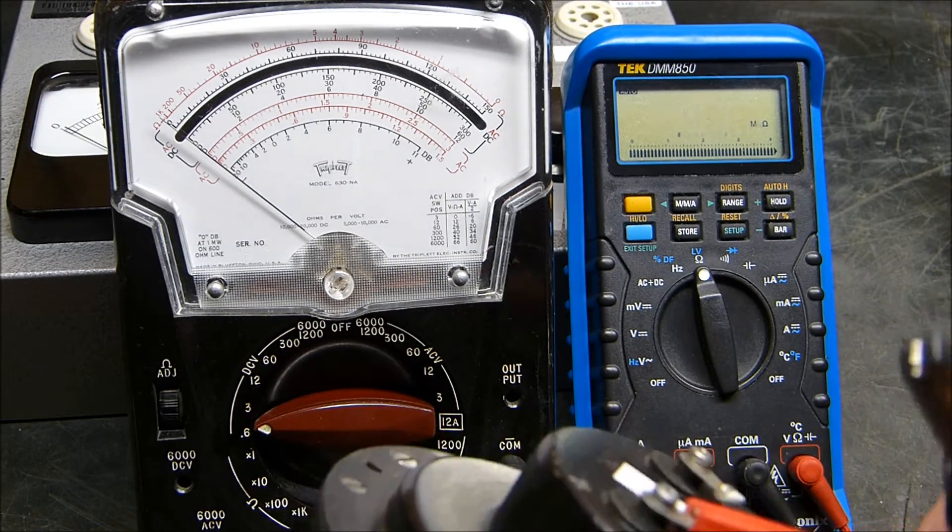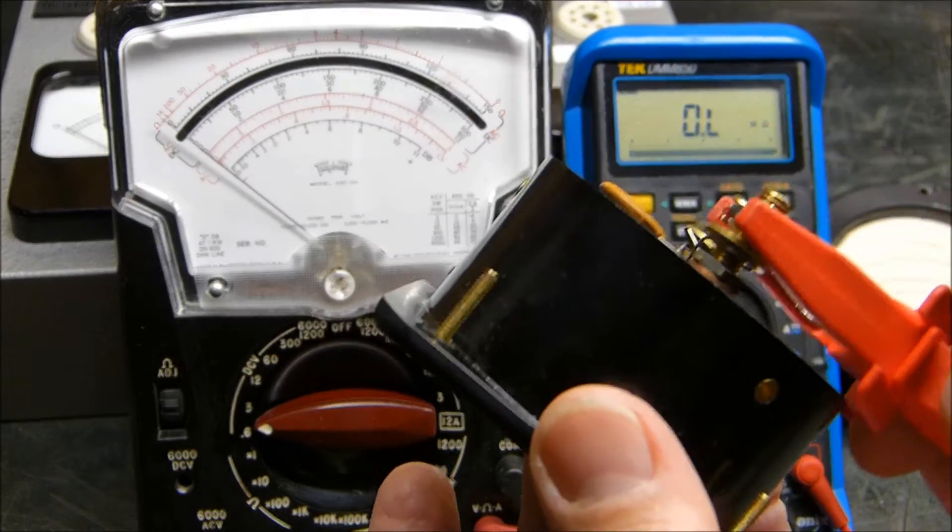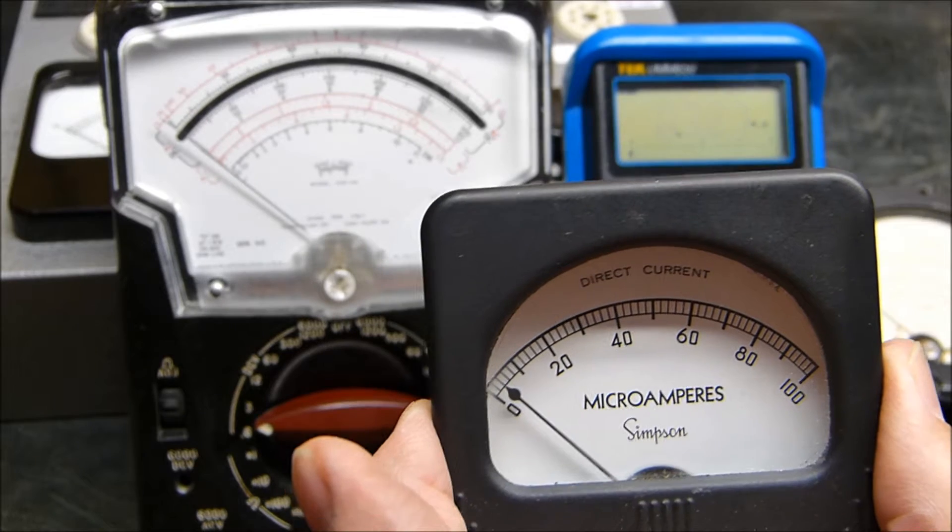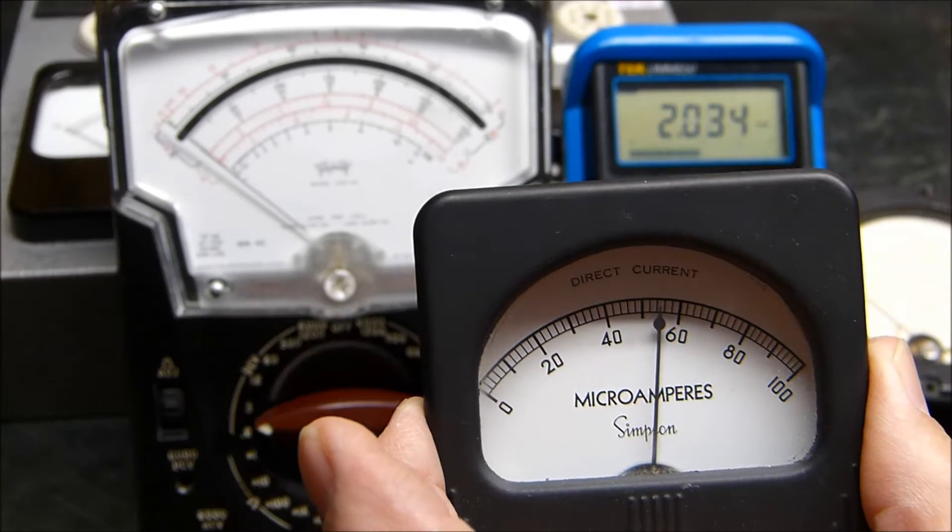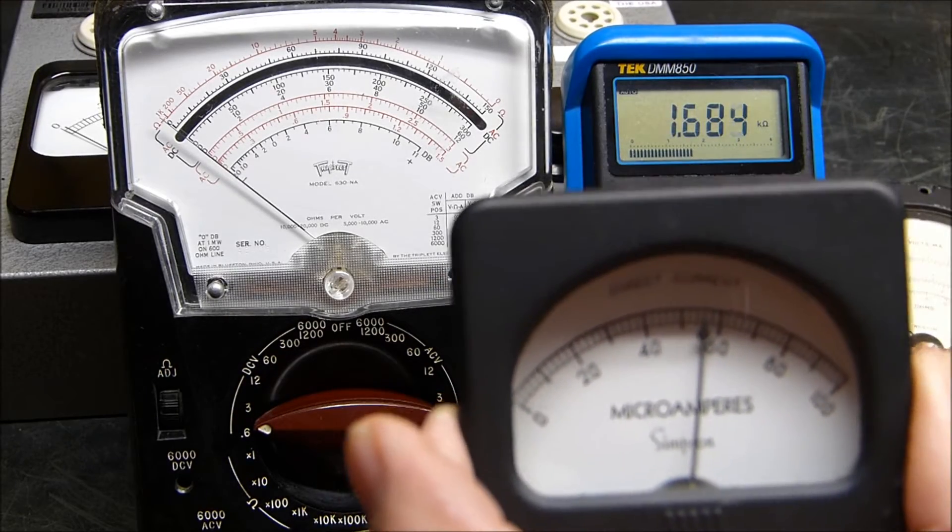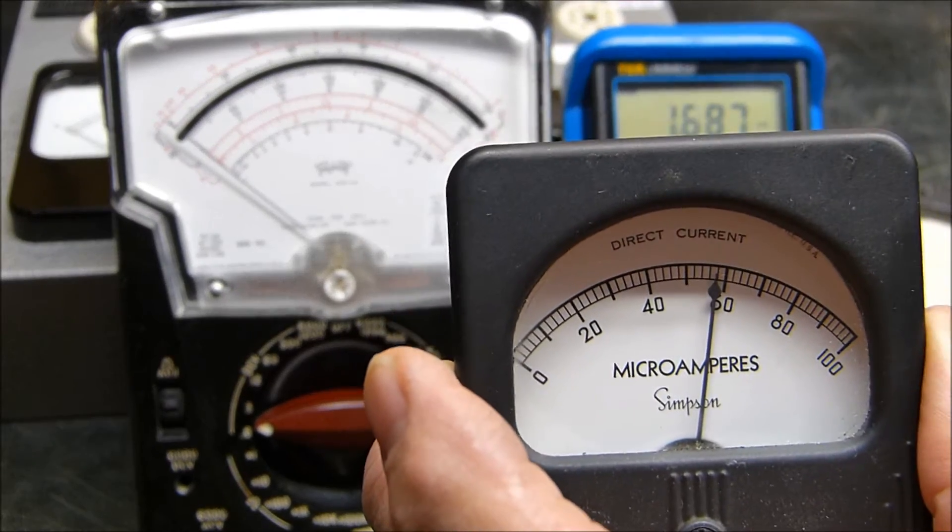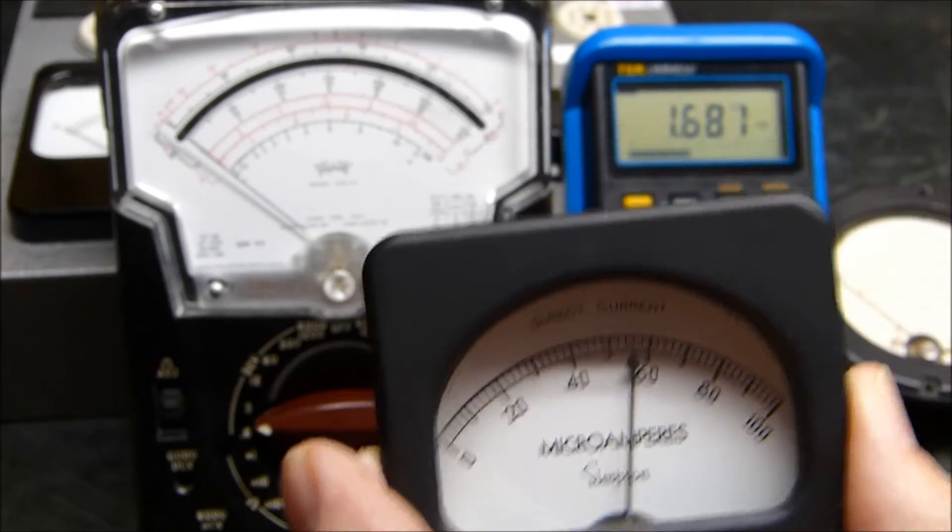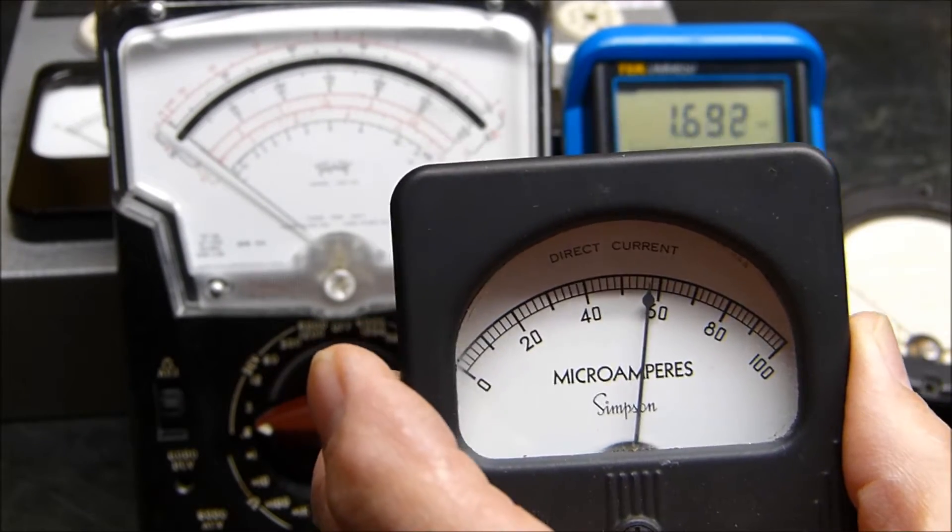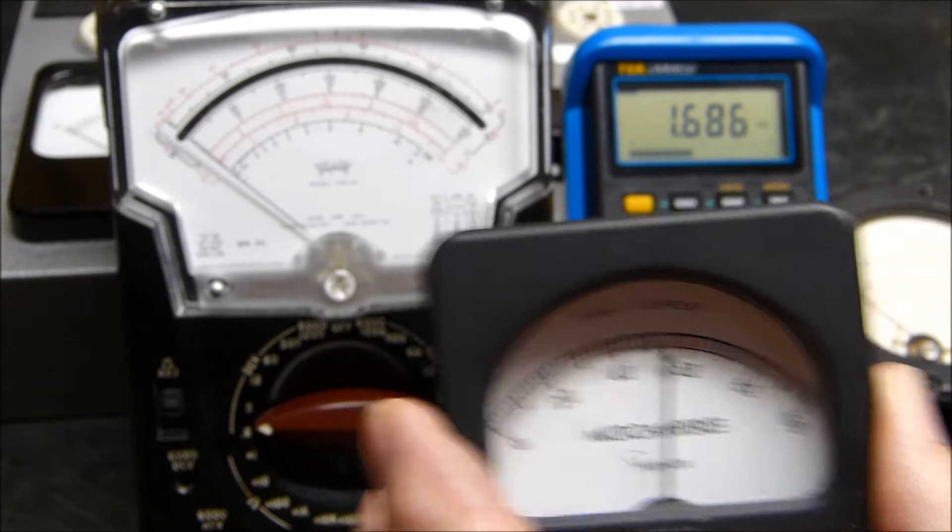This one, 100 microamp, let's put it across there and watch what happens. It thinks about it a while, reads about half scale, and reads 1.8K, 1800 ohms, can't make up its mind. Well, this is a 2500 ohm meter, so you get a bogus reading even though you have high dollar equipment. You just can't quite figure it out.